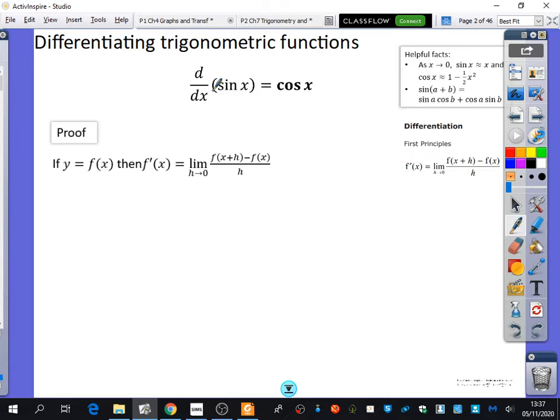I'm telling you to begin with that sine of x differentiates to cos of x. So now you know if you had something like y equals sine x, you could differentiate it to find that dy/dx was cos x. But we are going to do a proof of this.